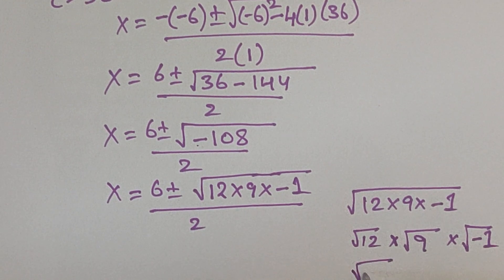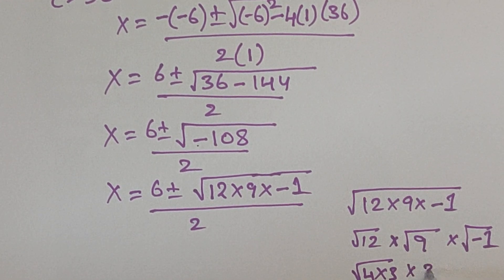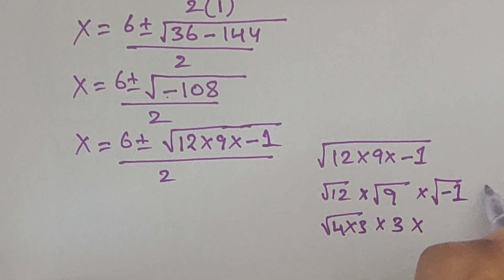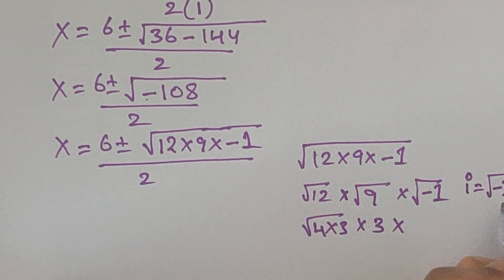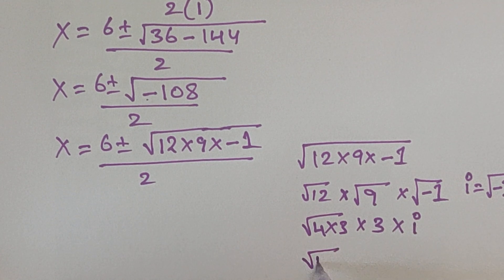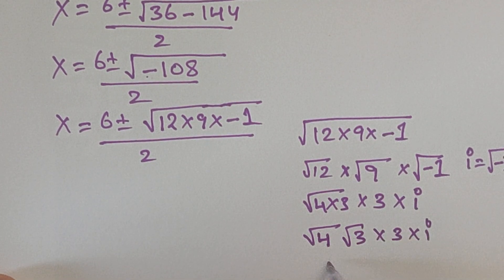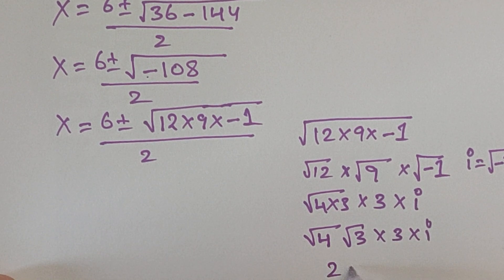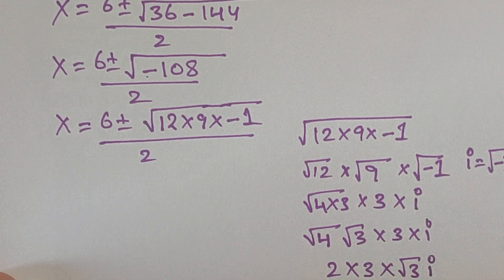Square root of 12 can be written as square root of 4 times 3. Square root of 9 equals 3. Square root of minus 1 equals i, the imaginary unit. So we have square root of 4 times square root of 3 times 3 times i. Square root of 4 equals 2, giving 2 times 3 times square root of 3 times i.